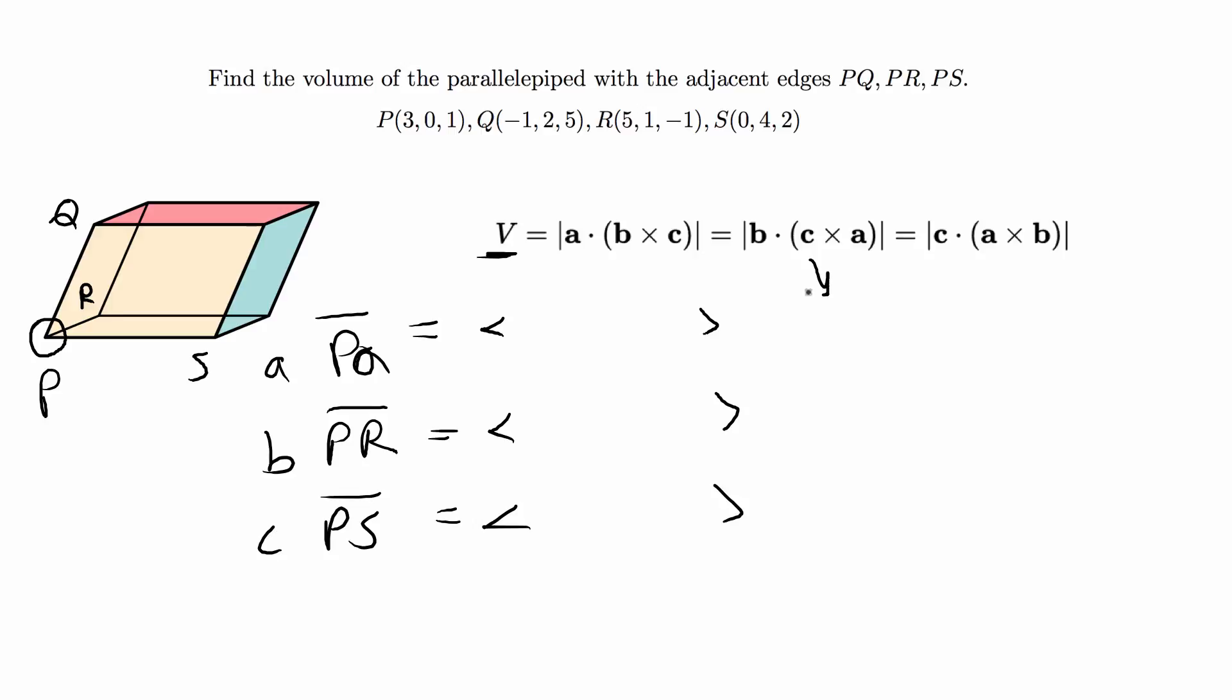I'm not going to prove it in this video, but the absolute value of this scalar triple product is equivalent to finding the determinant of the three components of the three line vectors.